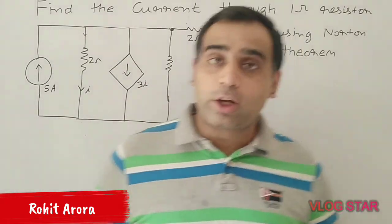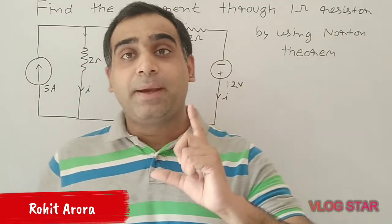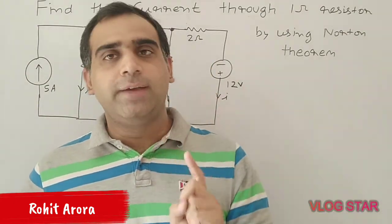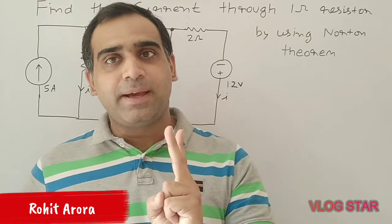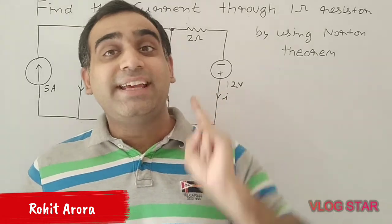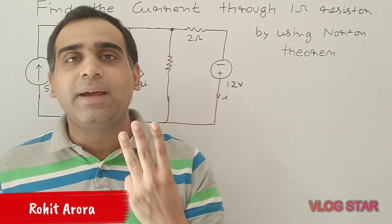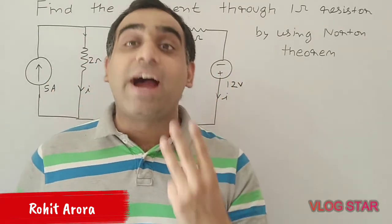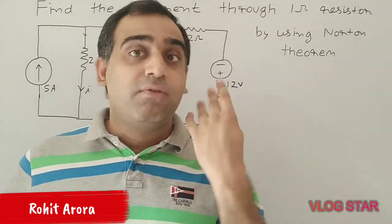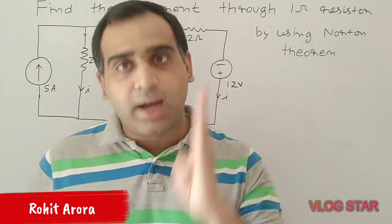In the case of Norton's theorem, the first step is to short circuit the load resistance. The second step is to find the ISC, that is the short circuit current. The third step is to find out the Norton resistance.